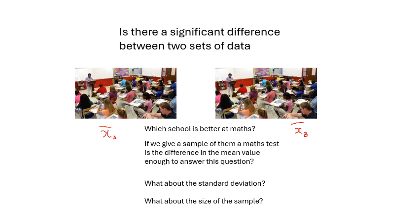What about the standard deviation? Maybe in School B there were a couple of very clever students who did really well, and so there was a larger standard deviation. What about the size of the sample? Ten students from each school — maybe we should have taken 20 or 30 students. So the size of the sample has to be taken into account. The difference in the means is our signal, but there are other things which need to be taken into account, like noise in the background — that's the standard deviation. So what we do is a T-test, which takes into account these extra things.